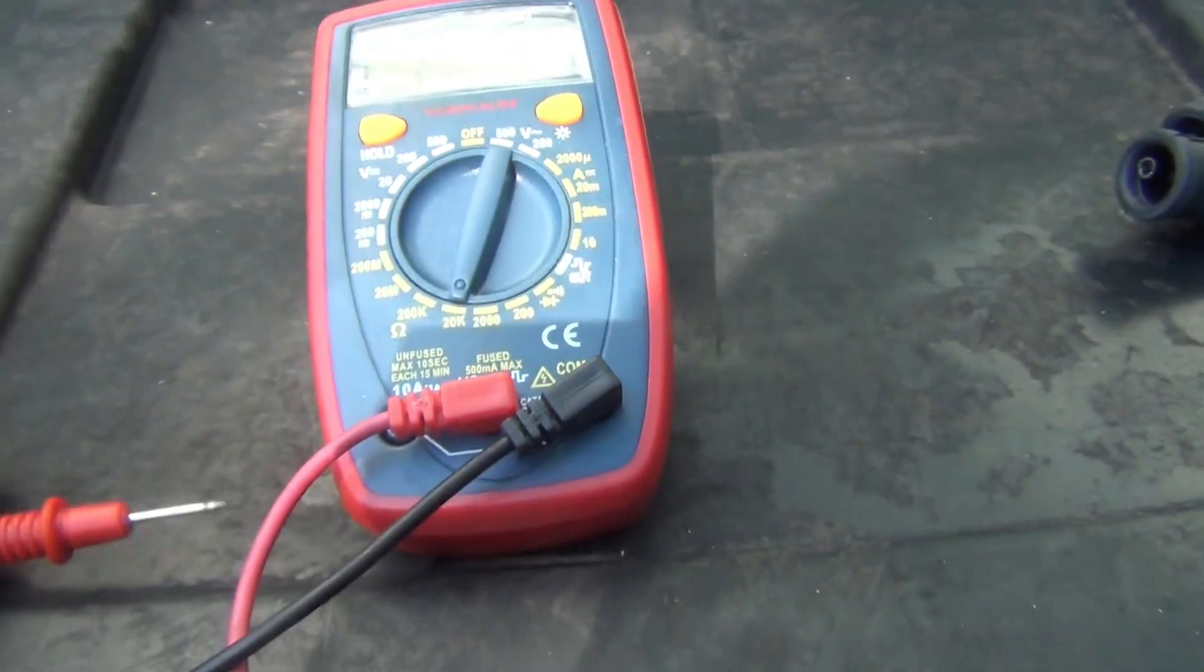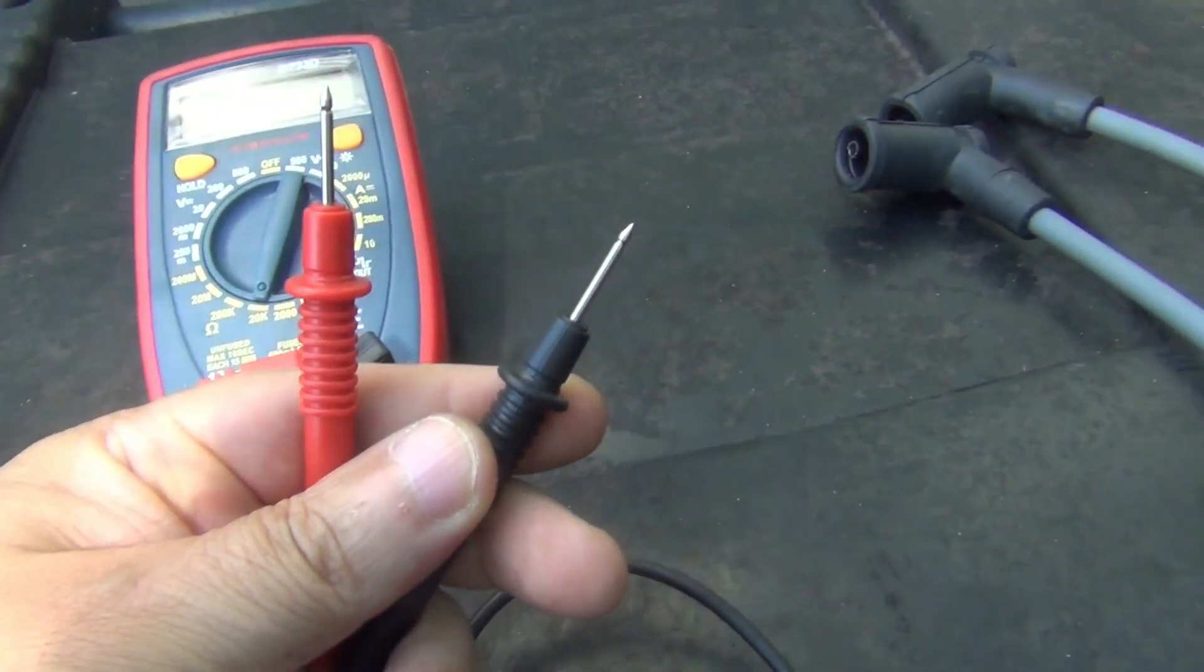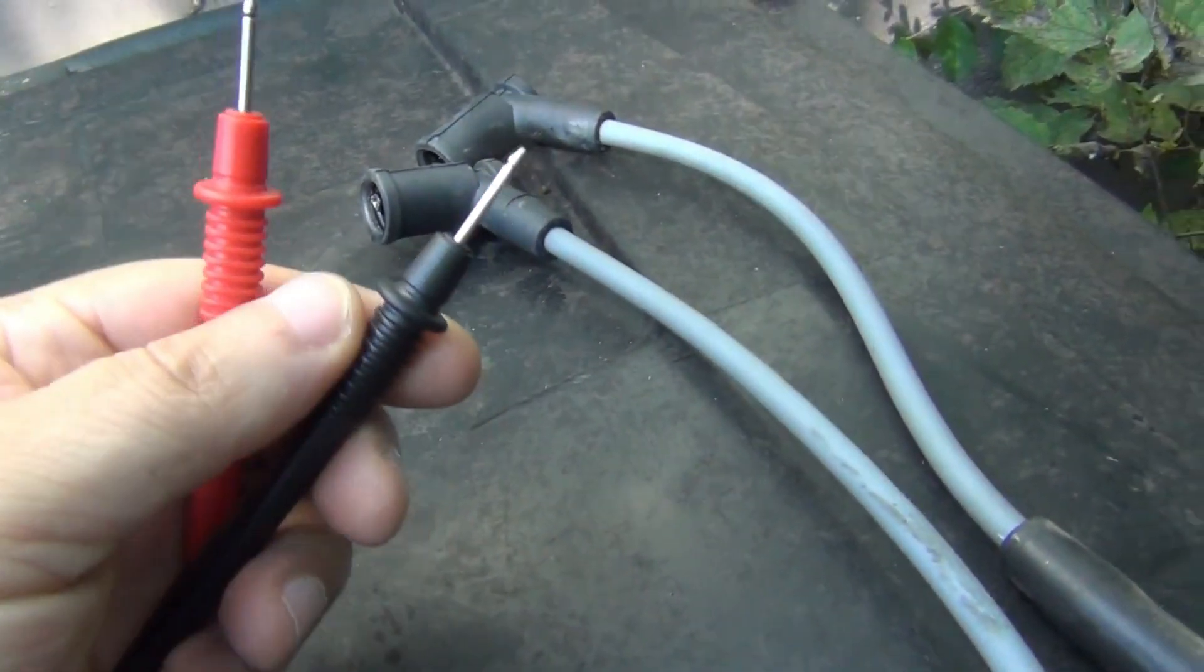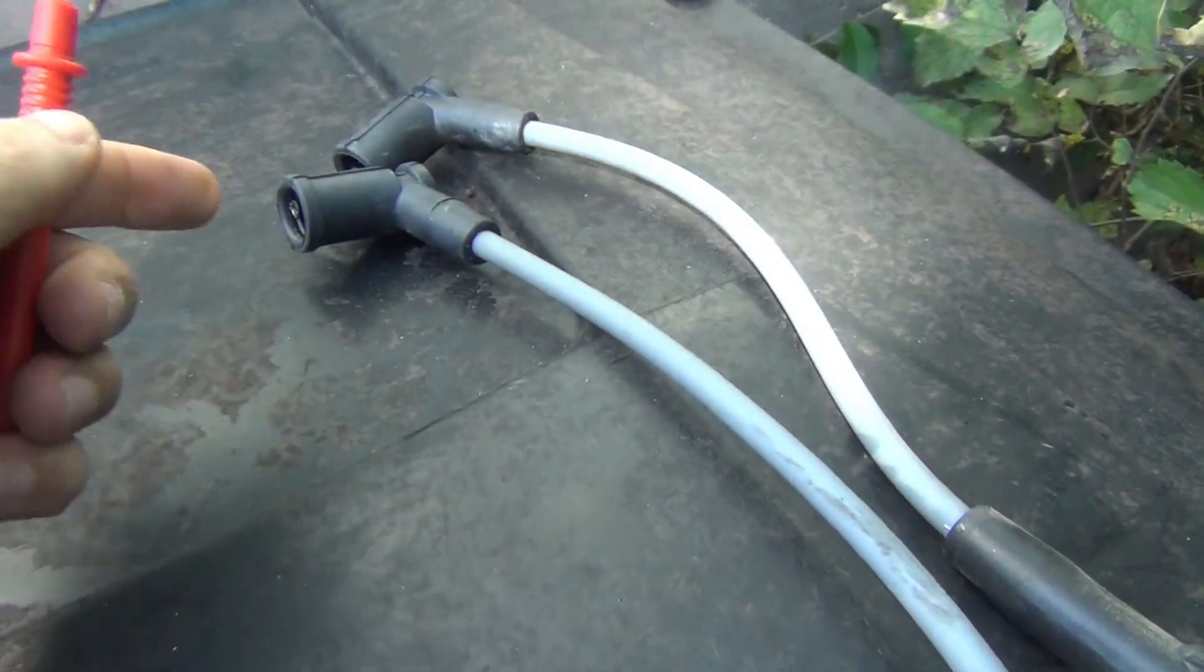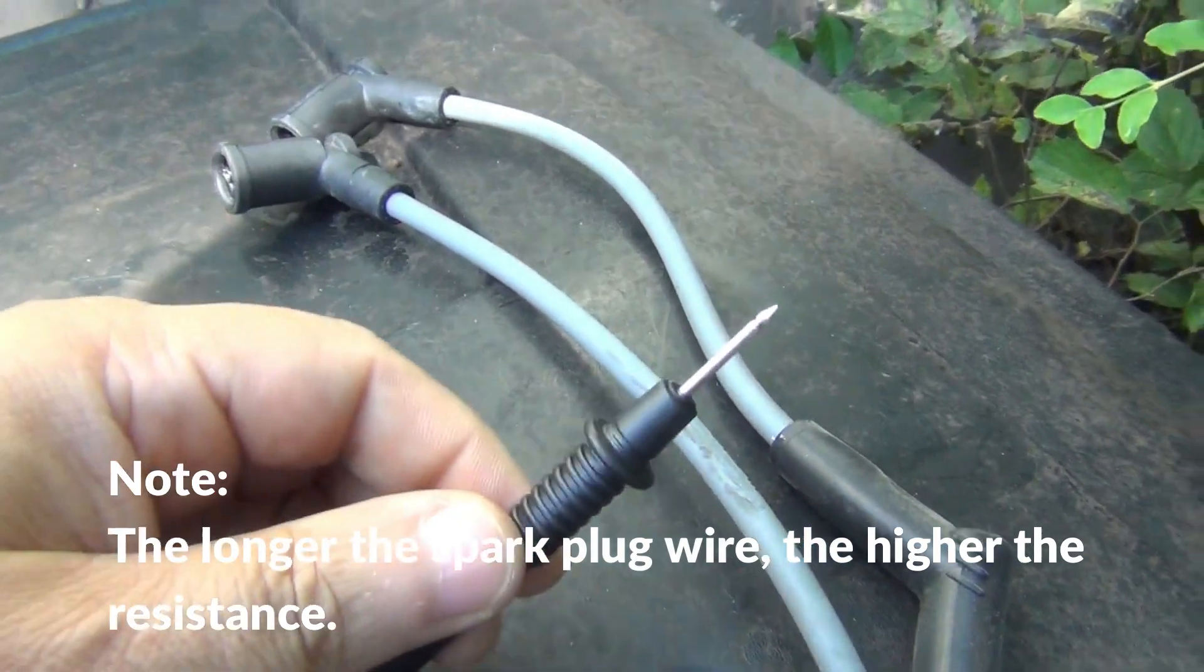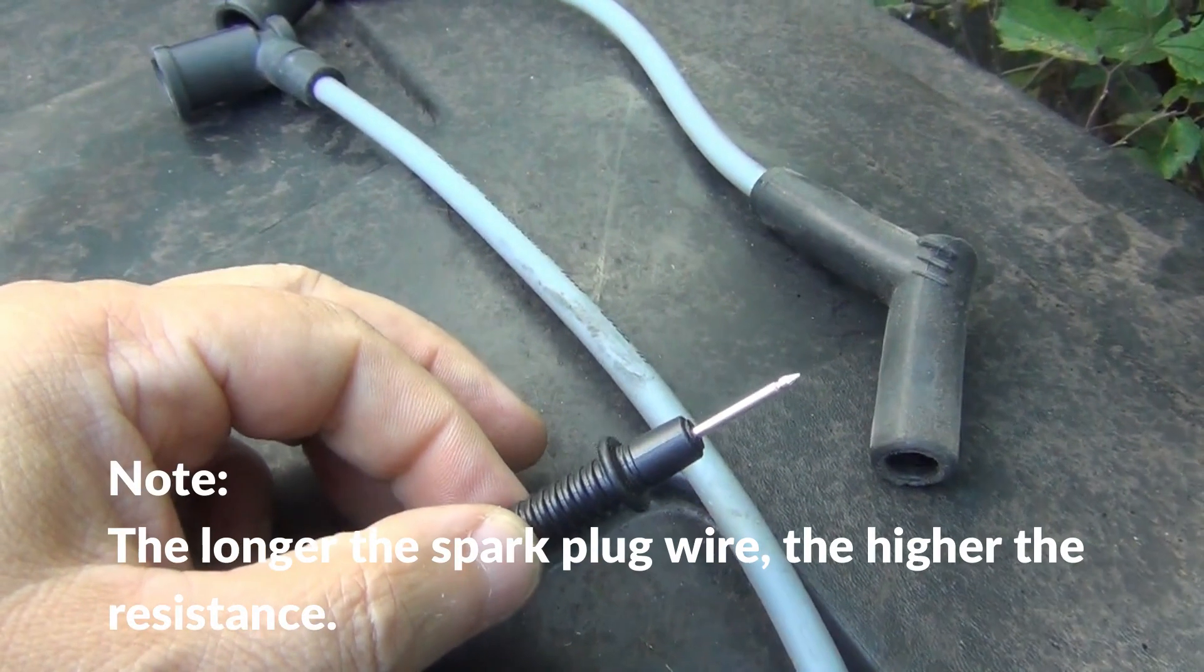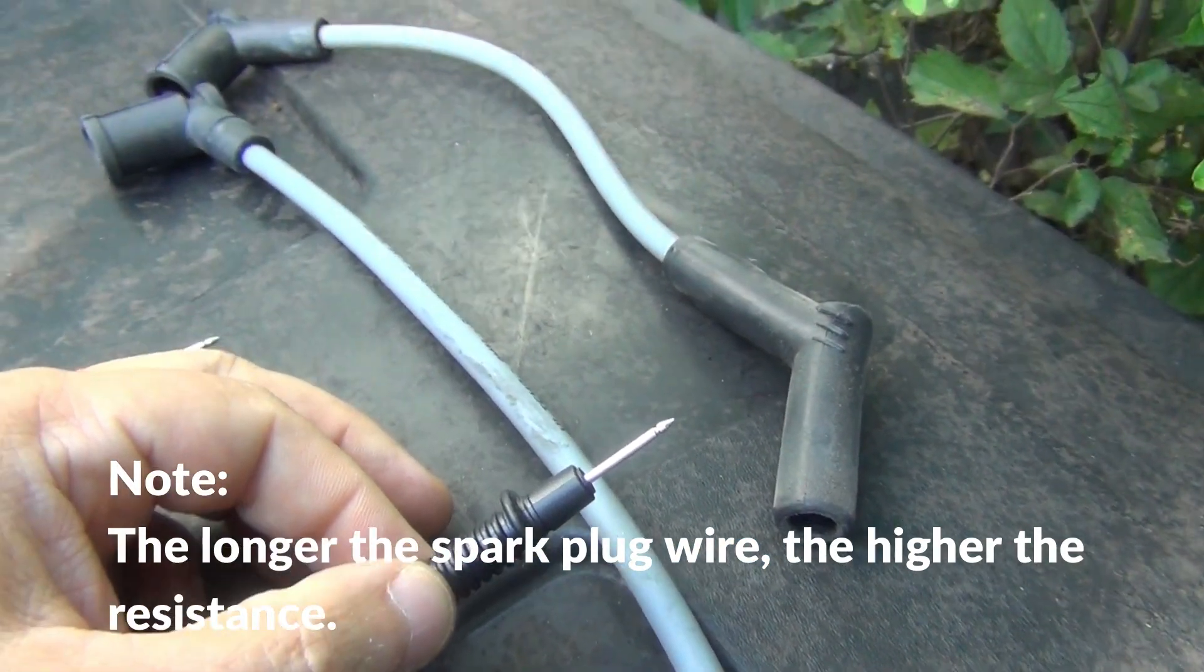Get your leads and it doesn't make any difference how you do it. You can put your red lead at one end and your black lead on the other. You can do it either way; as long as you're getting a reading, you'll get the same result.